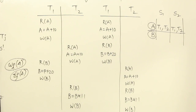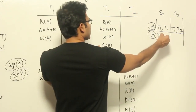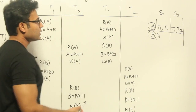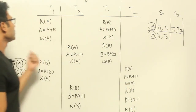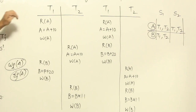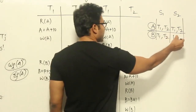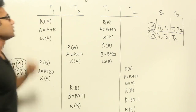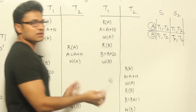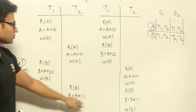There are two data items: A and B. Now for B: in S1, who is reading it first? T1 is reading it first. And who is writing it last? Going from the bottom, the write of B is by T2, so T2 is writing it last. Coming to S2, who is reading B first? T1 is reading B first. And who is writing B last? T2 is writing it. So the first rule and second rule are satisfied — whoever reads first should read first there, and whoever writes last should write last there.